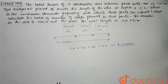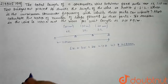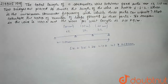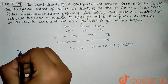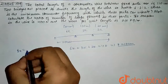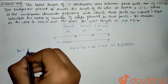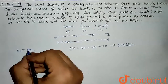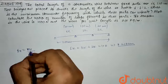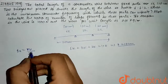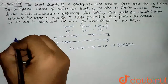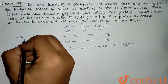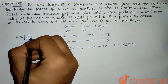For a stretched string, if it vibrates in N loops, its frequency is given by FN = NV / 2L, where L is the length, N is the number of loops, and V is the wave velocity on the string. The wave velocity is given by V = √(T/μ), where T is the tension and μ is the mass per unit length.